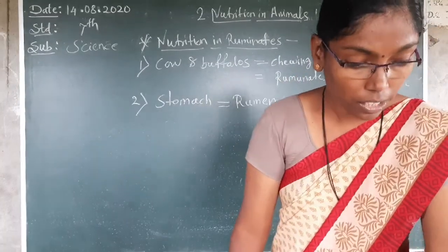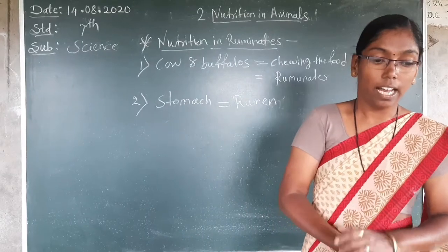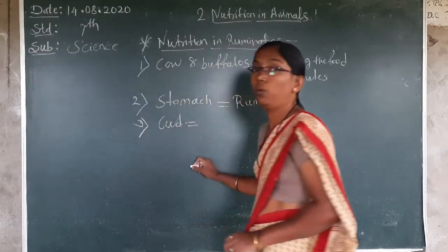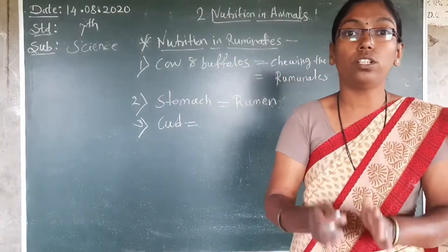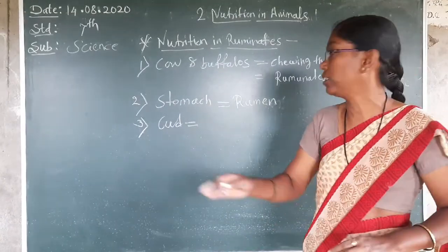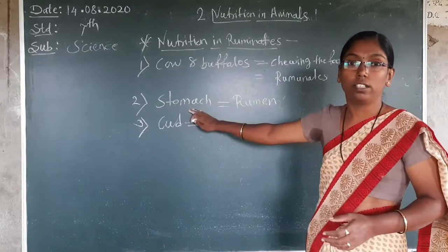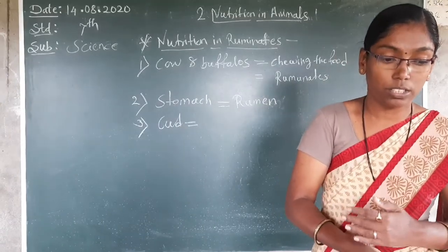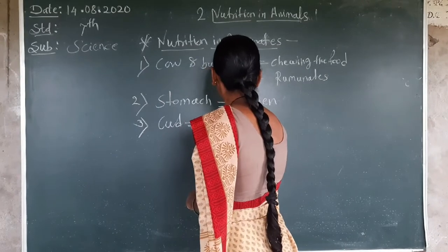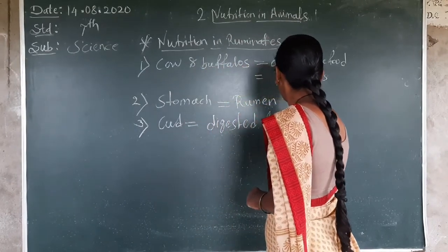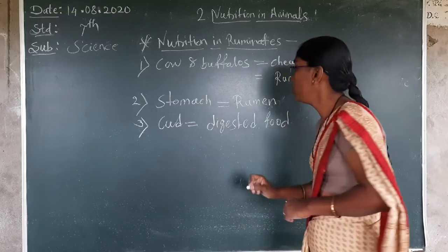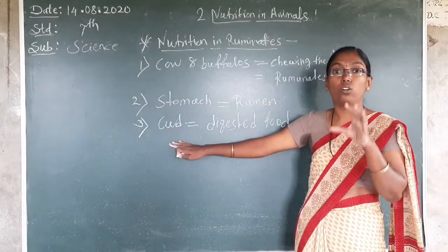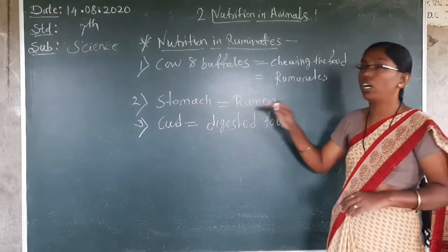Don't forget. Third part: the food is partially digested and stored as cud. What is cud? The partially chewed food is called cud. Food which is chewed and stored is called the rumen. Digested food is called cud. You can write it down. Cud means digested food stored in the stomach; rumen means only the undigested food stored in the stomach.